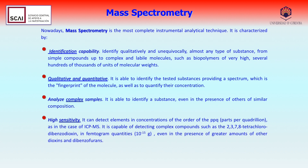Mass spectrometry, or mass spec, is nowadays the most extraordinary and complete analytical technique, and it is characterized by its identification capacity. It can be used both for qualitative and quantitative analysis.